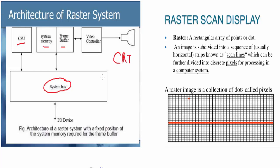Next, what is a raster scan display? Raster means an array of points or dots — this is how a raster image looks. It consists of dots known as pixels. An image is divided into a sequence of usually horizontal strips known as scan lines. The red one shown is the scan line, which can be further divided into discrete pixels for processing by a computer system.